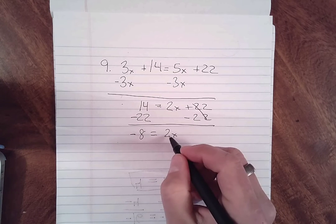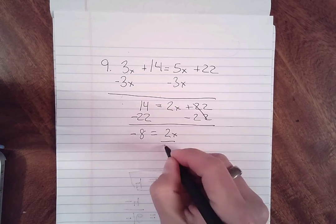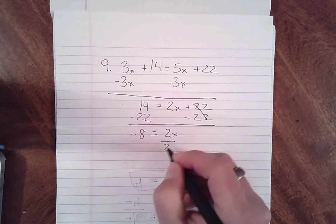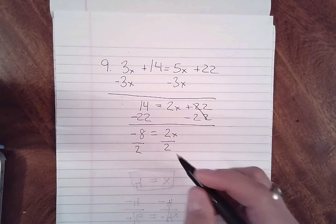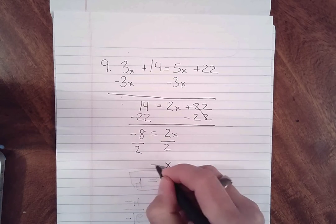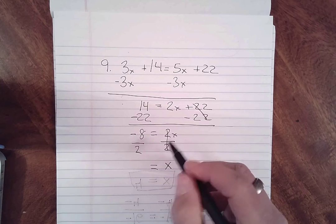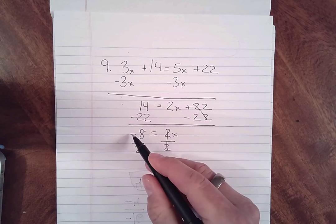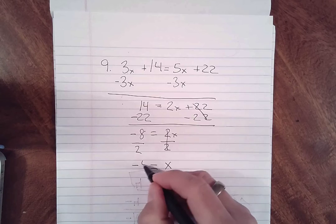So again, what number times 2 is a negative 8? And again, if we're multiplying, we have to divide to undo it. So in this case, it's gonna be x is equal to, because that's 1, that's 1x, negative 8 divided by 2 is a negative 4.